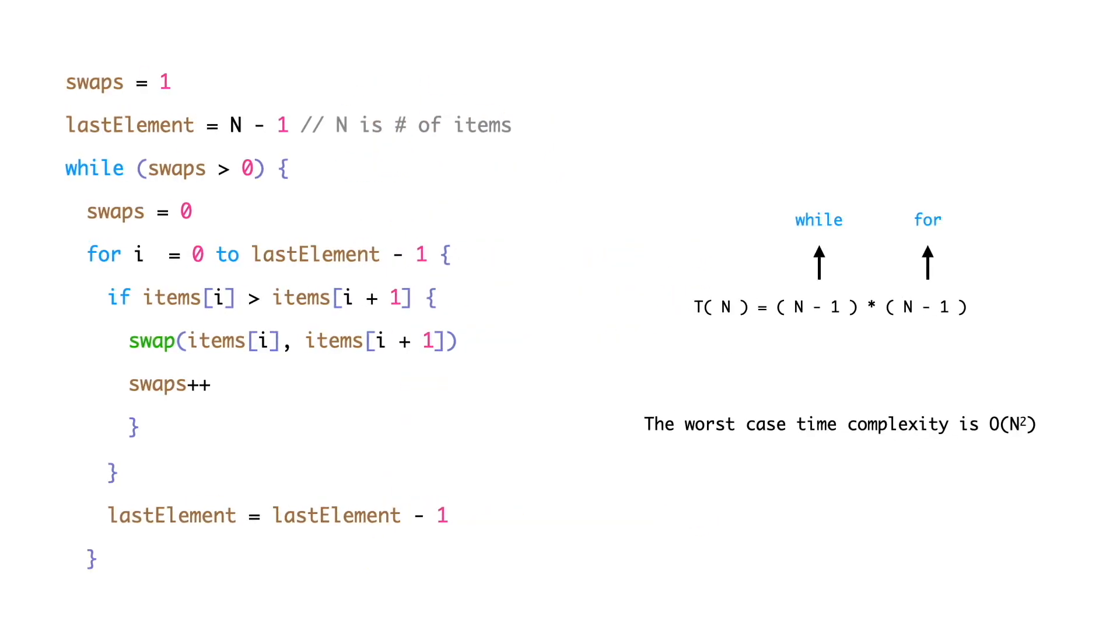Now, let's discuss the time complexity of bubble sort. The worst case scenario for bubble sort occurs when the array is sorted in decreasing order. In that case, the while loop executes for n-1 number of times.